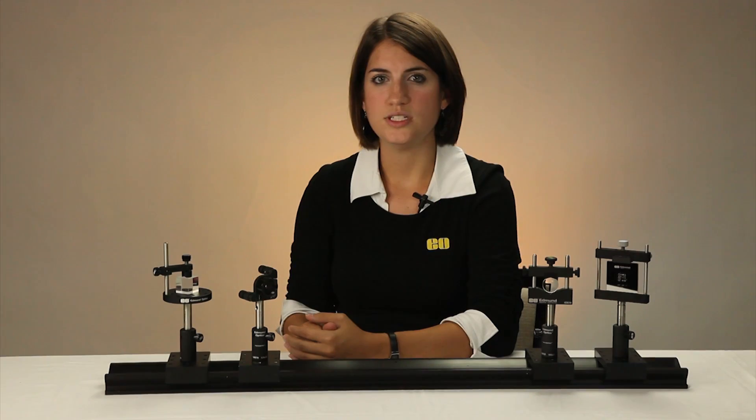In optics, we typically assume the Z axis is along the optical axis. To hold an optical component with the greatest precision and without causing stress or deformation, all six degrees of freedom should be constrained. However, adjustment in some of these degrees of freedom is commonly desired for alignment purposes, and this is something you should consider for your application.